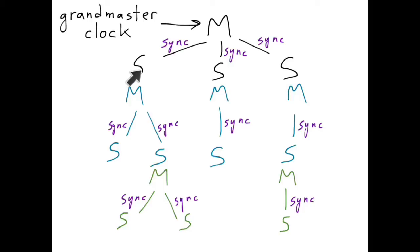Either directly, if they are in the second level, or indirectly, if they are somewhere lower in the hierarchy. It's a bit as if, starting from the grandmaster clock, the proper time percolates down the hierarchy.